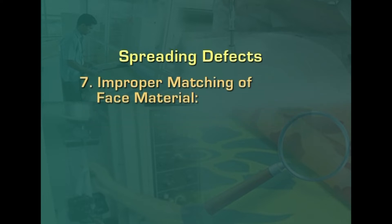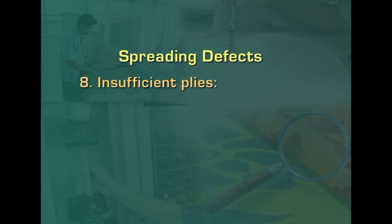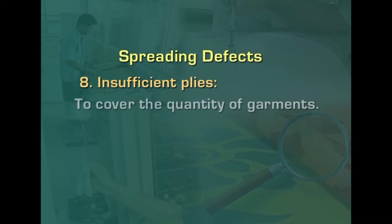Mismatching plaids — material spread too loose or too tight causing plaid lines to run diagonally or bow. Misdirected napping — air pockets not removed and napped material reversed in spreading. Improper matching of face material — not spread face down, face up, or face to face as required when being cut. Insufficient plies — not enough plies to cover the required quantity of garments.